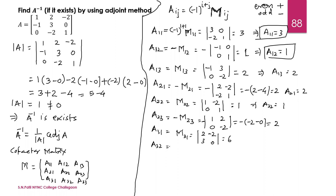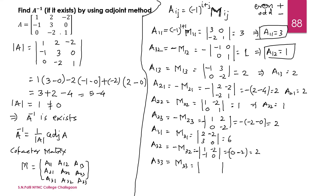A32: 3 plus 2 is odd, so the sign is negative. Minor of element minus 2, deleting its row and column gives 1, minus 2 and minus 1, 0. Computing this with the negative sign gives A32 equals 2. Then A33: 3 plus 3 is even, sign is positive. Minor of 1, deleting its row and column gives 1, 2 and minus 1, 3. The determinant is 3 minus minus 2, that is 3 plus 2, giving 5. So A33 equals 5.